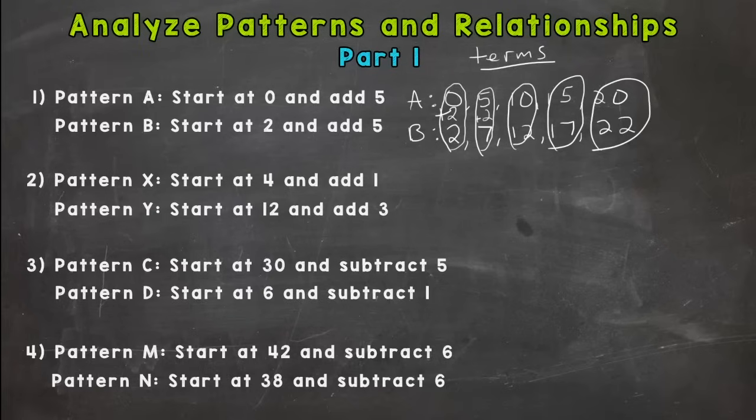Now this is a new vocab concept here. Corresponding terms. And that means the first terms in the patterns A and B, these guys are like partners. They're corresponding terms. The 5 and 7, the 10 and 12, and so on. So those are corresponding terms.